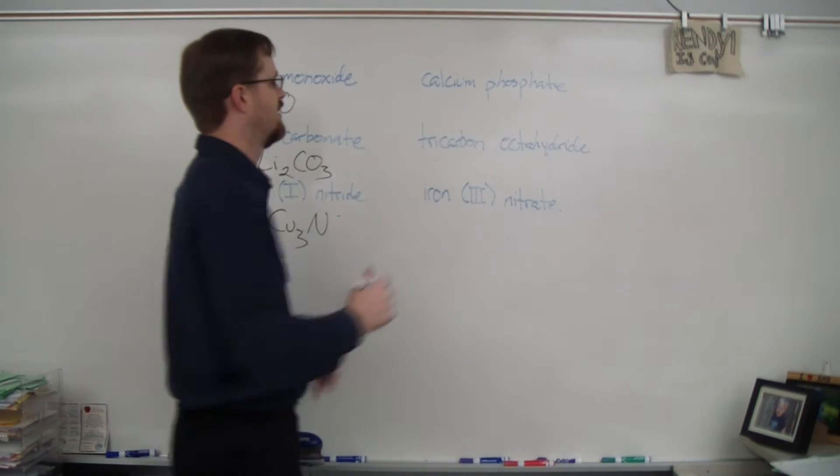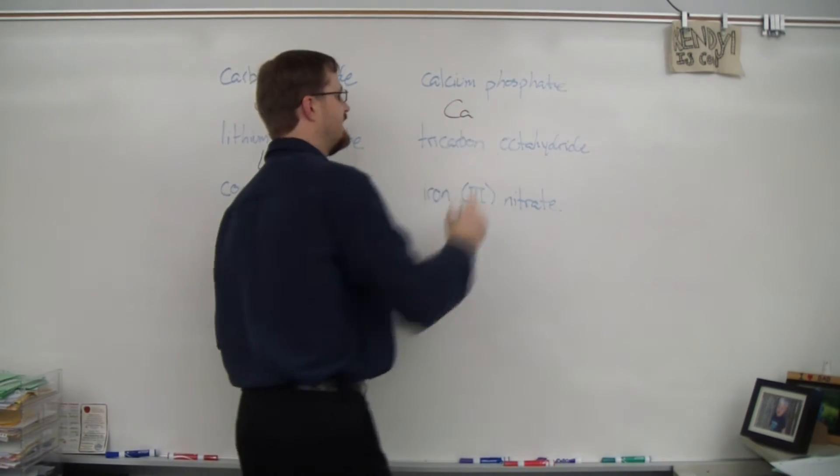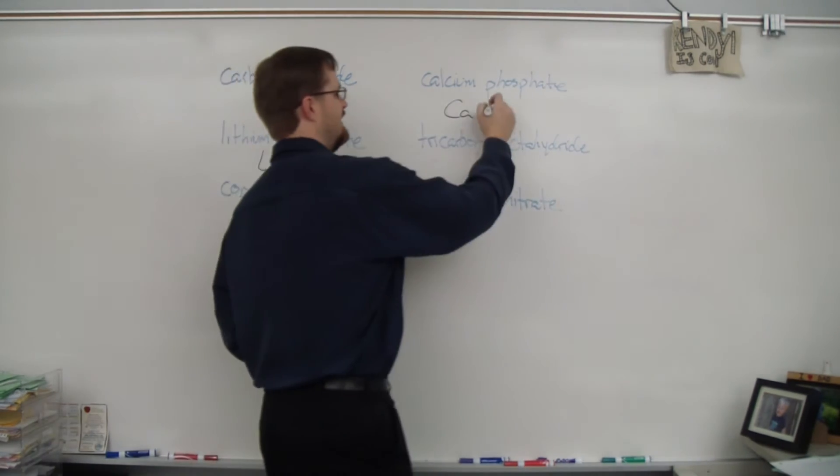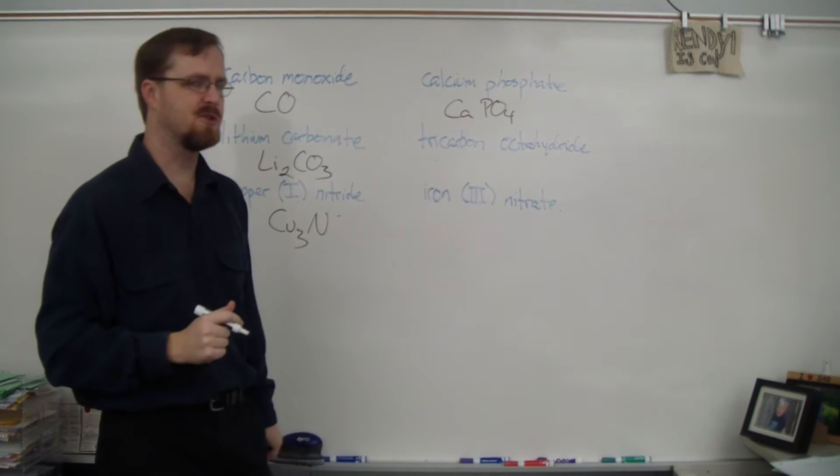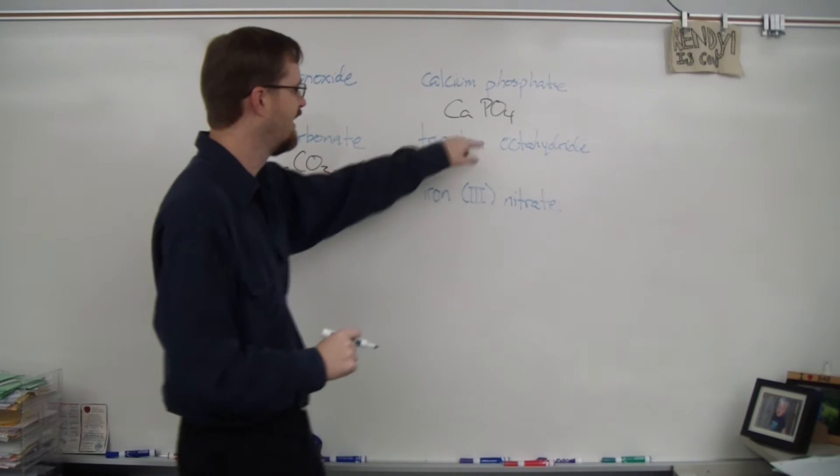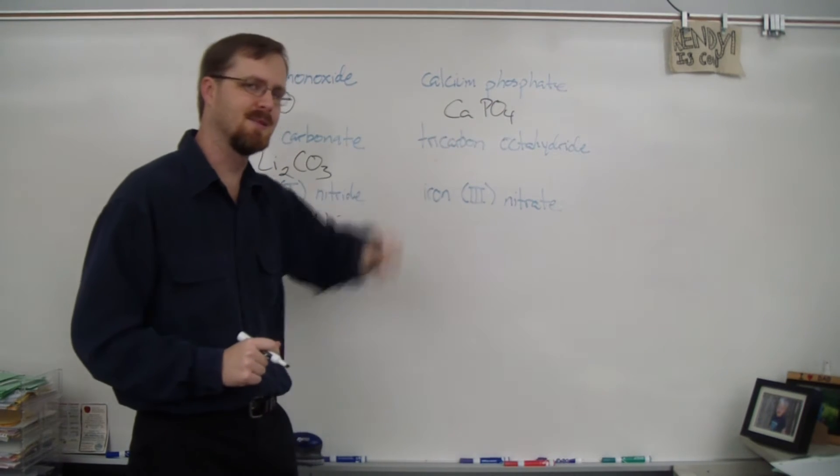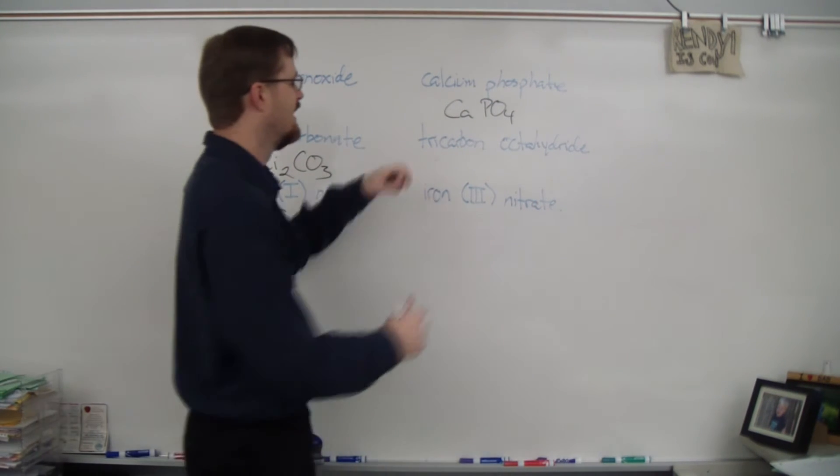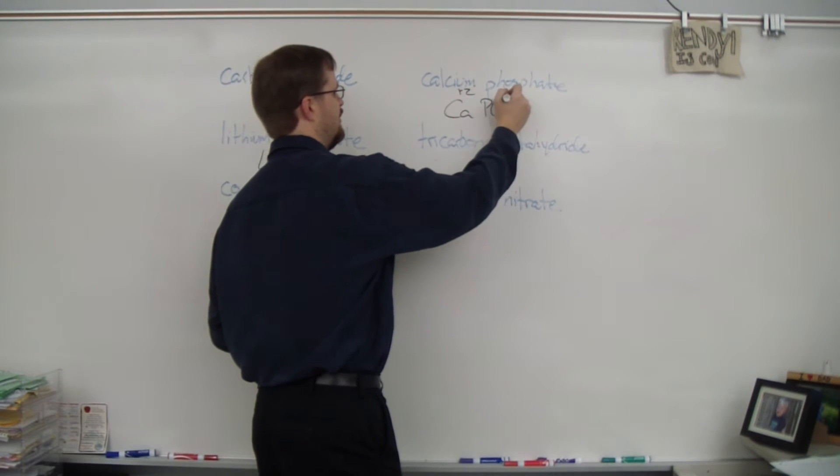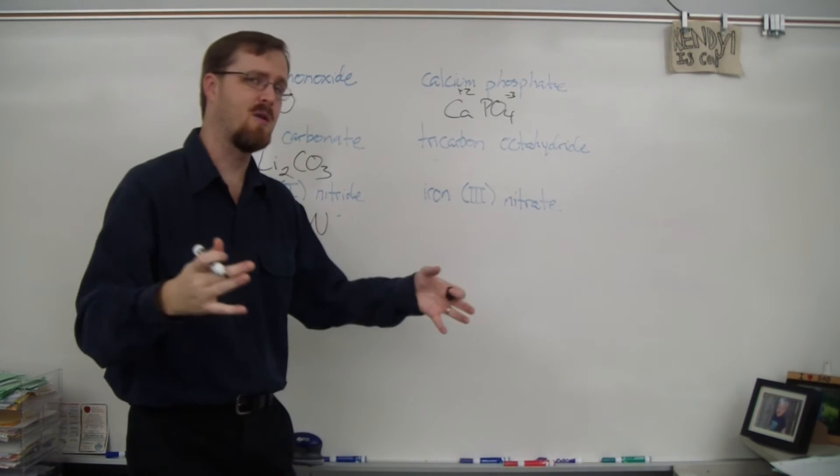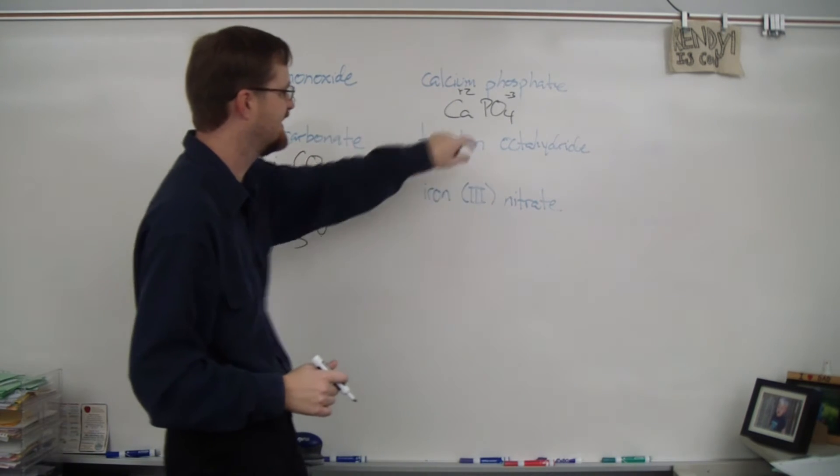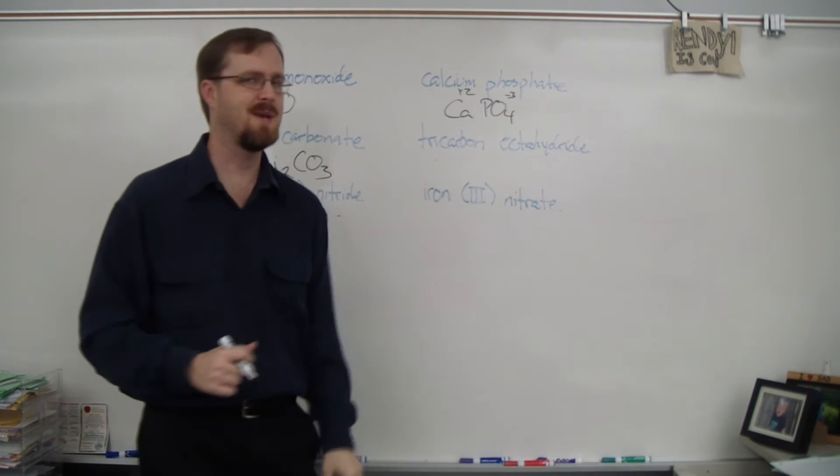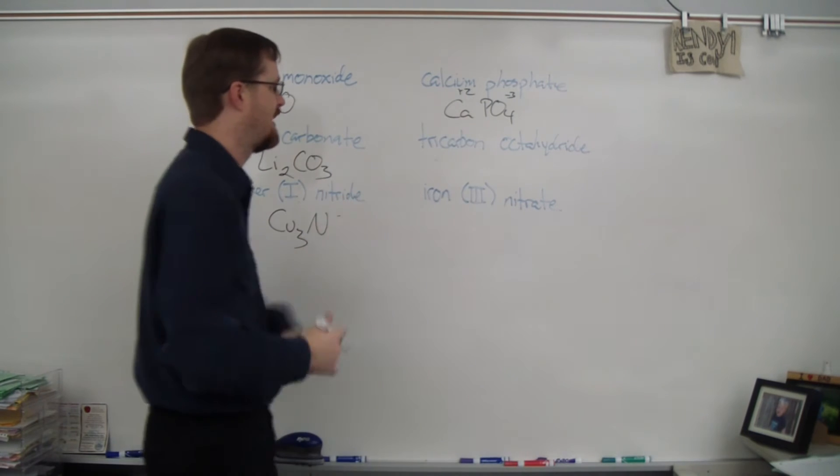Calcium phosphate. So calcium is Ca. Phosphate is PO4. Calcium is in group two, so it has a charge of plus two. Phosphate is one of our polyatomics and it has a charge of negative three. So we have a positive two and a negative three. So how do we balance this out? That's right. I need three calciums to make a positive six and two phosphates to make a negative six so that they balance out.